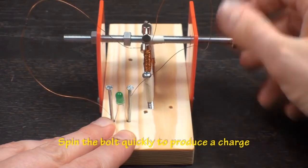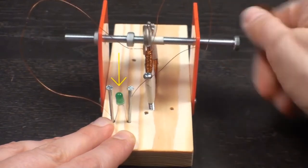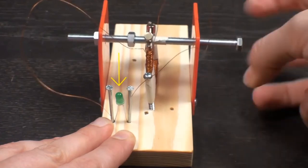Twist or flick the bolt quickly to get the magnetic rotor to spin. Look for the small flash from the LED.